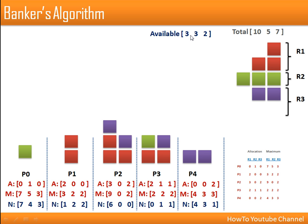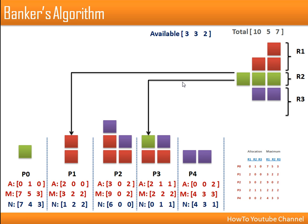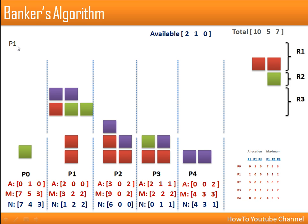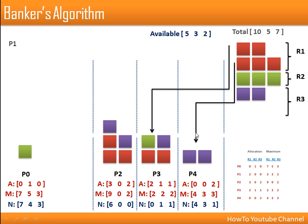We have available resources 3, 3, 2. This cannot satisfy requirements of P0, P2, or P4. The available resources can satisfy requests for P1 or P3. We go for P1 first. P1 needed 1 of R1, 2 of R2, and 2 of R3. After allocating to P1, we are left with 2 of R1, 1 of R2, and no R3. P1 now has all resources, so it will complete its execution.